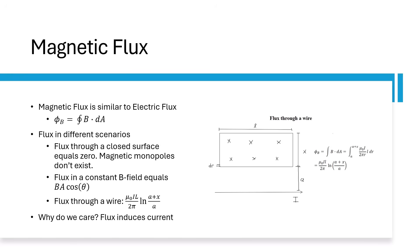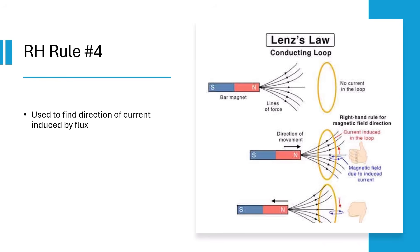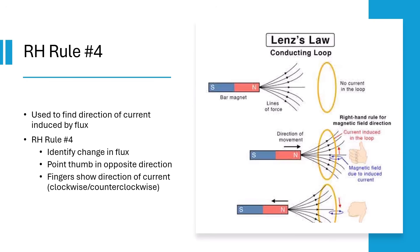But the reason we care about flux is that it induces current. We use the right-hand rule number four to determine the direction of current induced by flux. Find change in flux and then point your thumb the opposite direction. The directions your fingers curl show the direction of current.